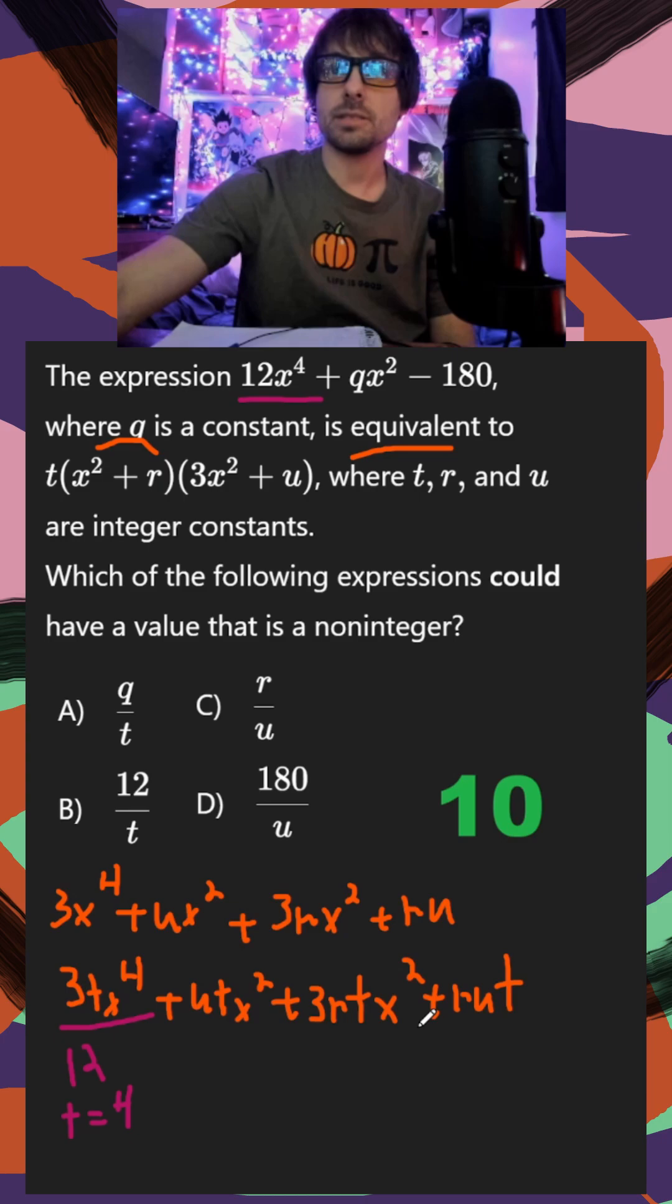Which makes all this much easier. That just means this is going to be 4u x squared, plus 3 times 4, 12rx squared. And then this one is just plus 4ru.